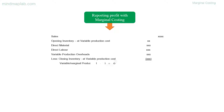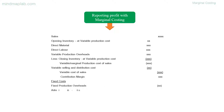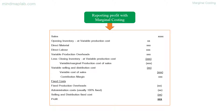Less the closing inventory gives the variable marginal production cost of sales figure. Variable selling and distribution costs are deducted at this stage to get the variable cost of sales figure. Fixed costs — both production and non-production — are expensed out. Profit is the end figure.